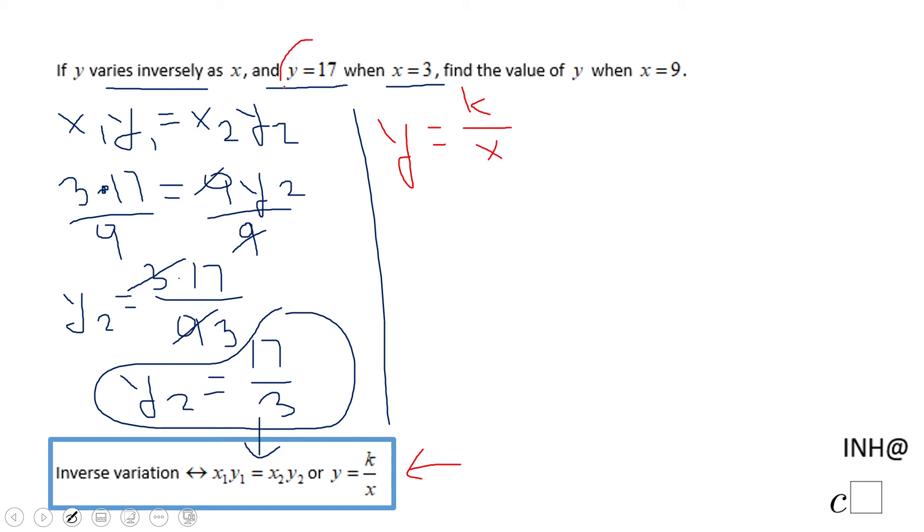We're going to look again at the first part of the problem, which says y is 17 when x is 3. That allows us to solve for k. We multiply by 3 both sides, and we end up with k equals 3 times 17, that is 51.